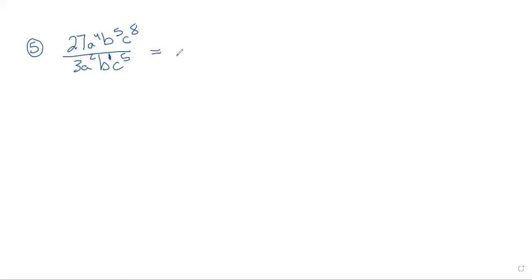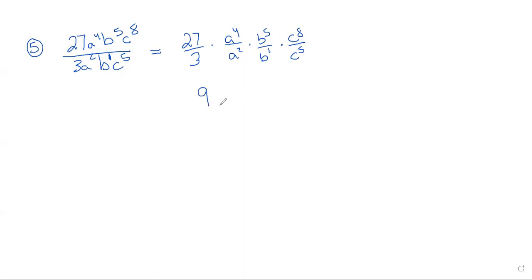So we're going to break this up into four different division problems. We've got 27 divided by 3, a to the fourth divided by a to the second, b to the fifth divided by b to the first, and c to the eighth divided by c to the fifth. Now we can simplify each one: 27 divided by 3 gives us 9. a to the fourth divided by a to the second — same base, subtract the exponents — 4 minus 2 is 2. b to the fifth divided by b to the first — 5 minus 1 is 4. And c to the eighth divided by c to the fifth — 8 minus 5 is 3.